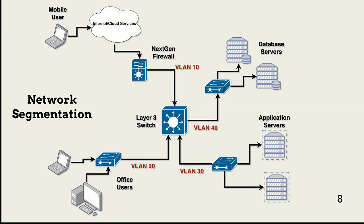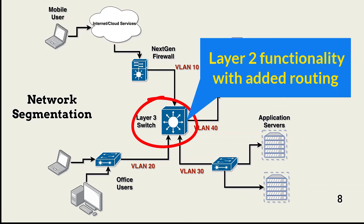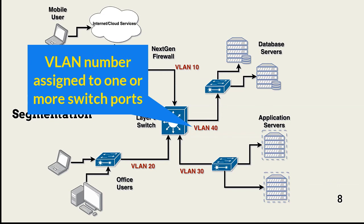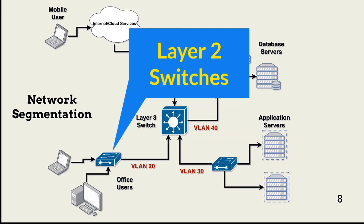In addition to reducing collision domain size, segmentation is also used as a security control. This example shows a common segmentation approach using VLANs, or virtual local area networks. A Layer 3 switch includes routing capabilities as well as Layer 2 switch functionality. The routing capability is needed to allow VLANs to communicate with each other when allowed. VLANs are configured by assigning one or more ports on the Layer 3 switch to a VLAN number. In our example, we have four ports configured as VLANs, and Layer 2 switches physically connect multiple devices to each VLAN port.